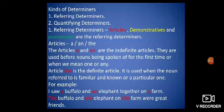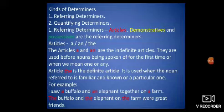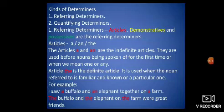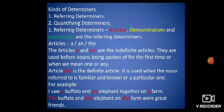Now, kinds of determiners. There are two kinds: referring determiners and quantifying determiners. In referring determiners, articles, demonstratives, and possessives are included.